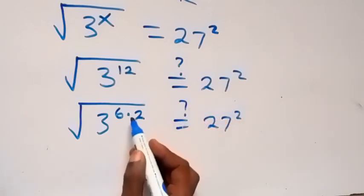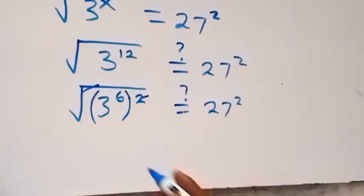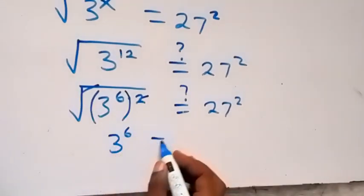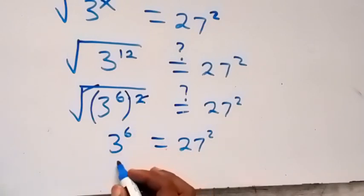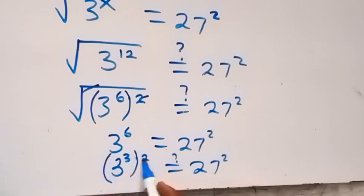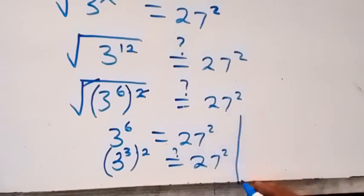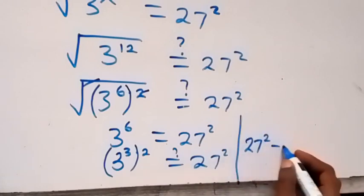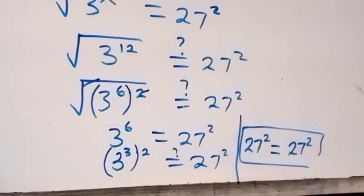From here we can separate this using brackets — since this power multiplies, the 2 here cancels the square root, then we have 3 raised to power 6 equals to 27 squared. We can also write power 6 as 3 times 2, so 3 raised to power 3 times 2 equals to 27 squared. Since 3 raised to power 3 is 3 times 3 times 3, which is 27, we have 27 squared on the left equals to 27 squared on the right-hand side. Therefore the left-hand side equals the right-hand side.